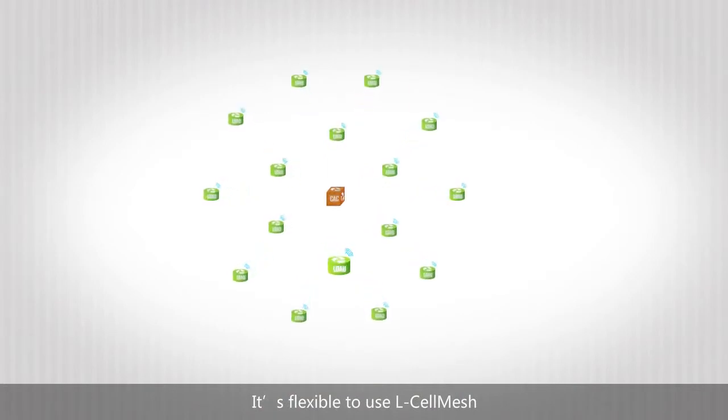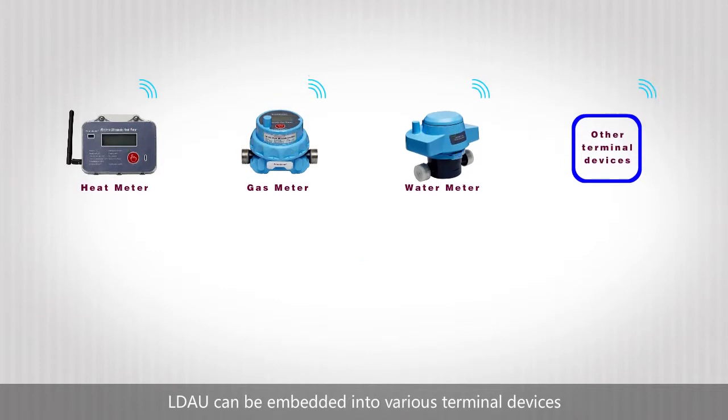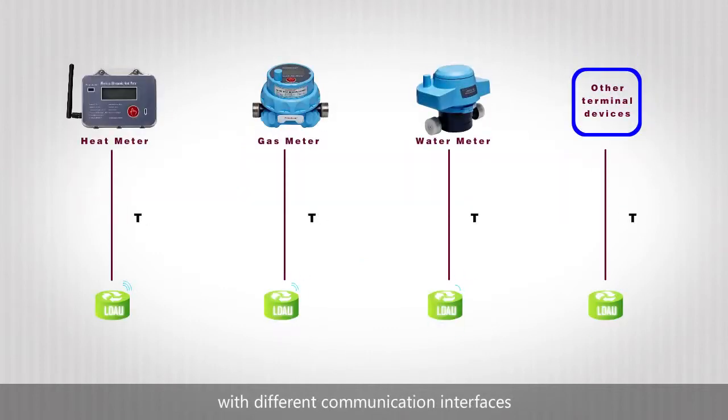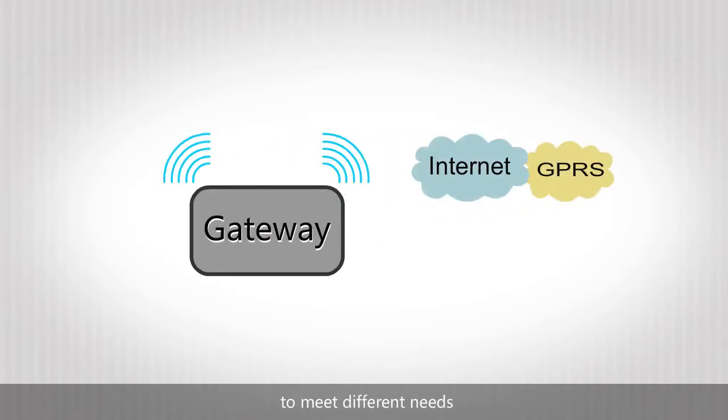It's flexible to use L-Cell Mesh. LDAU can be embedded into various terminal devices. It can also be externally connected with different communication interfaces. CAC can be embedded into other network equipment to meet different needs.